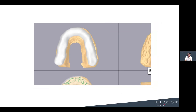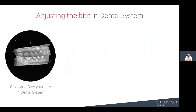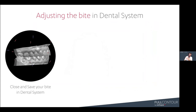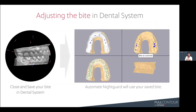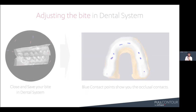The easier way to fix it is to take the case into a dental system, articulate your bite, save the bite, and upload the case back to Automate. That same case, once articulated and re-uploaded, shows a nice even occlusion because the bite was closed in dental system. If your doctor is taking scans and the bite is slightly open, that will affect fit and function of the Nightguard straight out of the printer — you want to see blue contacts around the arch for even occlusion.